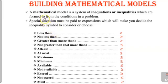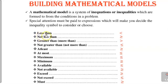You must understand what a mathematical model is. A mathematical model is a system of equations or inequalities which are formed from the conditions in a problem. When you look at mathematics paper 2 programming questions, they first give you questions in statement form. In those statements, there will be conditions that you need to follow in order for you to create the inequalities or the mathematical model. So you need to pay attention to words such as 'less than.'